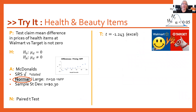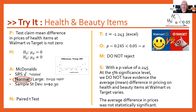It gave me a test statistic of negative 1.243 and a p-value of 24.5%, which is definitely bigger than 5%, so I do not reject. With a p-value of 0.245 at the 5% significance level, we do not have evidence that the mean difference in pricing on health and beauty items at Walmart versus Target varies. In other words, the average difference in prices was not statistically significant — there were some small differences, but not big enough to rise to the level of statistical significance.